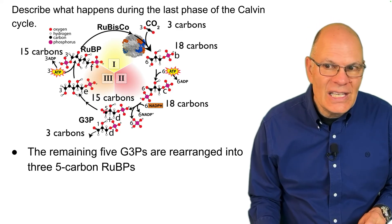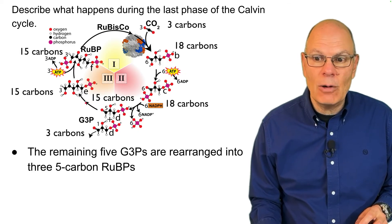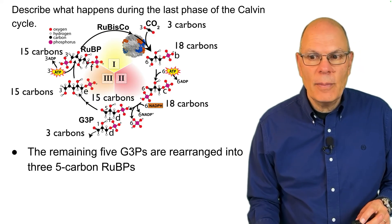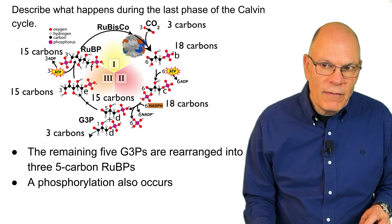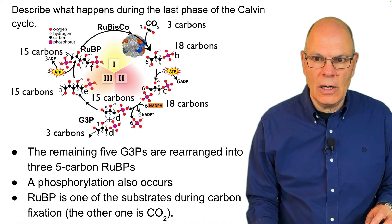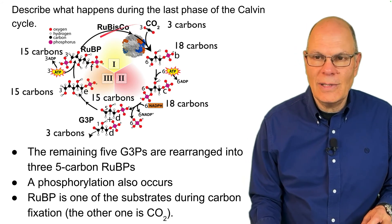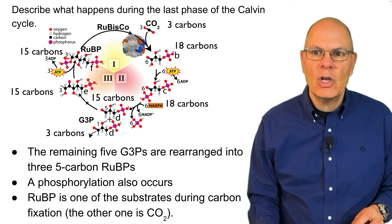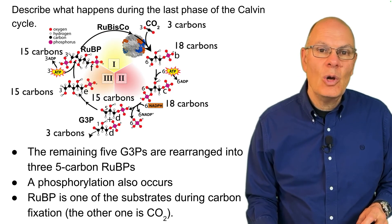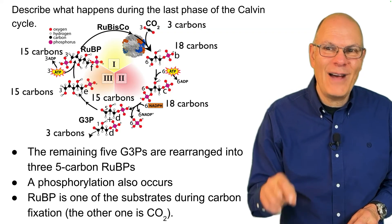In the regeneration phase, these five G3Ps are rearranged by a variety of enzymes — that's why there are multiple arrows shown — and they're rearranged into three five-carbon RuBPs. Along the way, a phosphorylation occurs, again using energy from the light reactions. RuBP is then one of the substrates for carbon fixation along with carbon dioxide. We started with 15 carbons and after the whole process, we again have 15 carbons. If you can explain that, you're set up for an A and a five on the AP Bio exam.